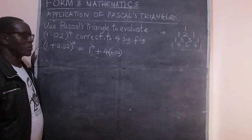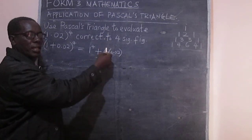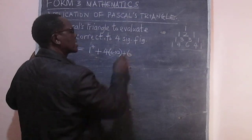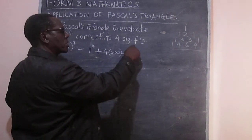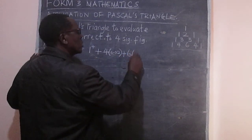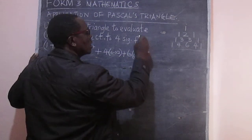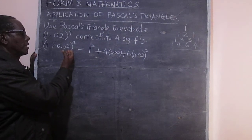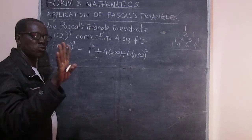So you see, 1 power 4, 4, a power 3, b power 1. And then we shall go to the next coefficient, 6. And this time, 1 will be raised to power 2, and 0.02 will be raised also to 2, so that we can have the total for the indices getting to 4.